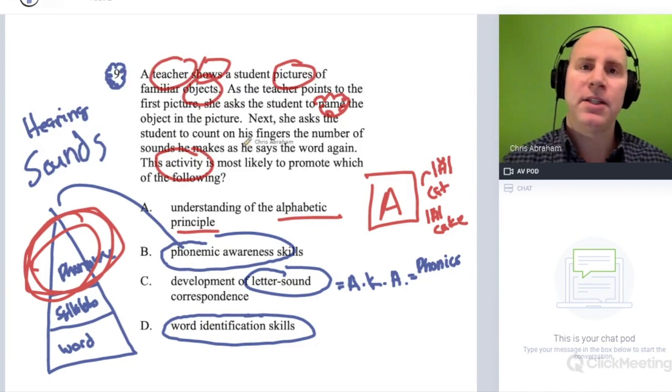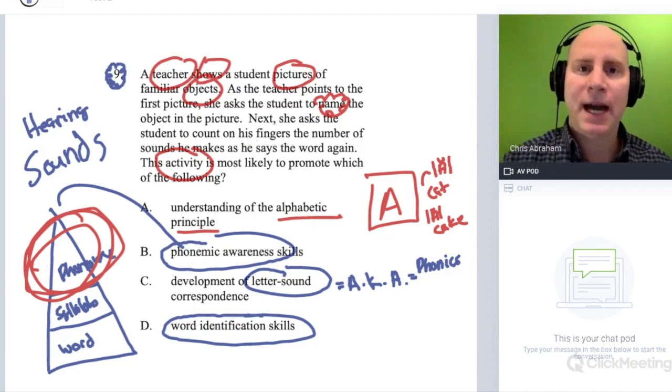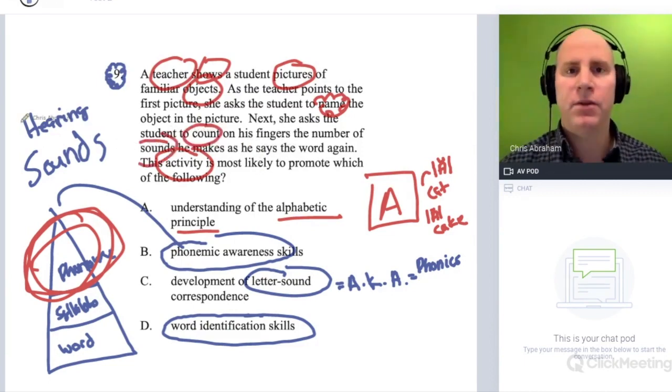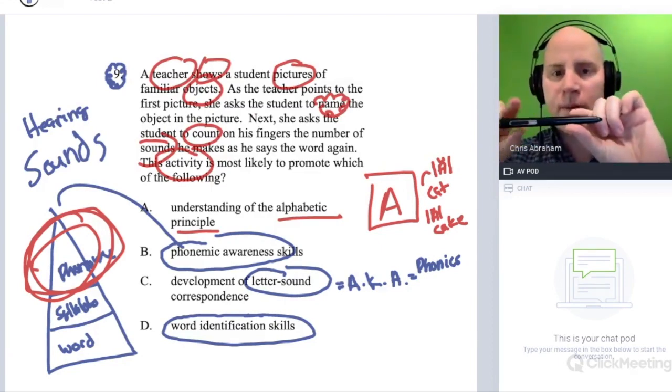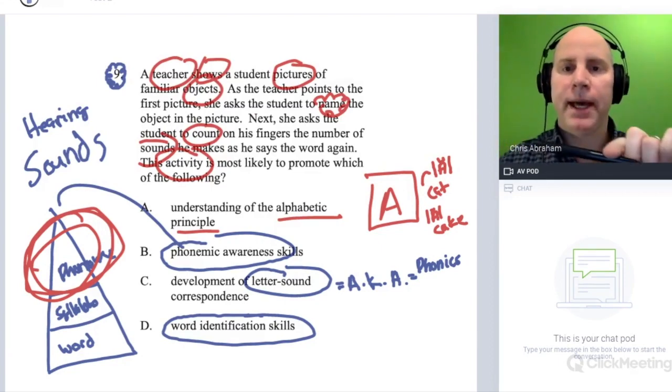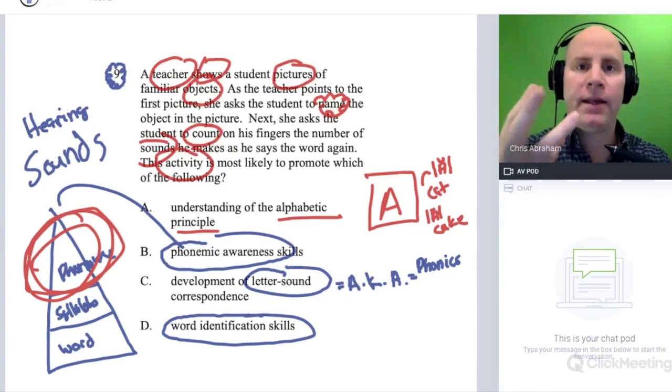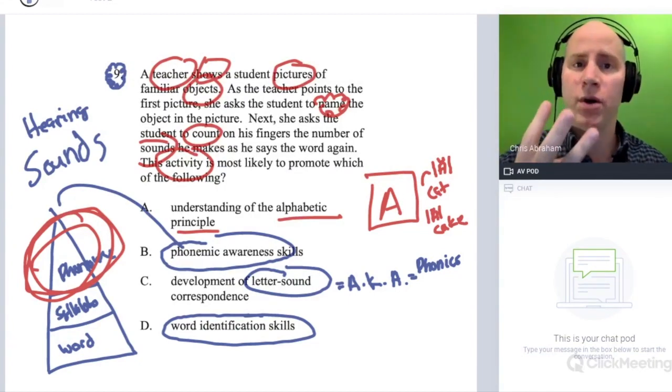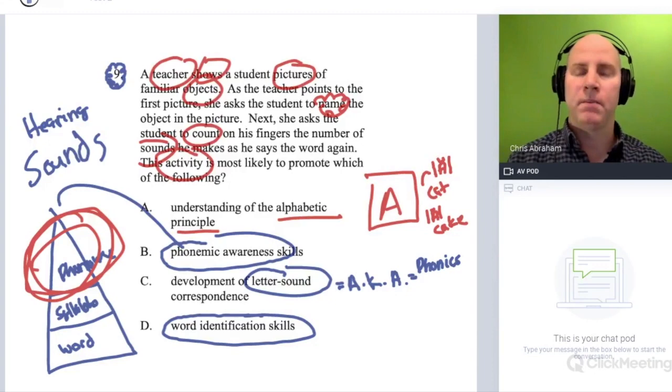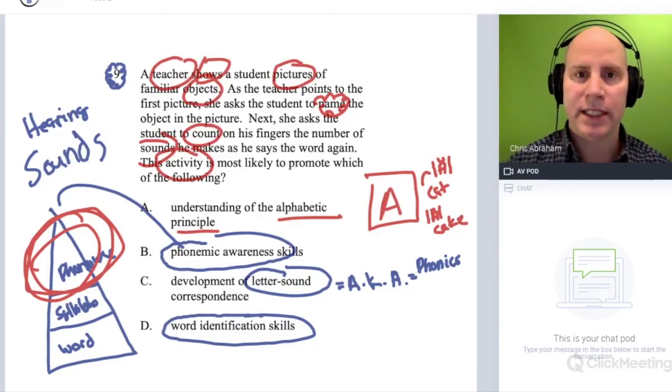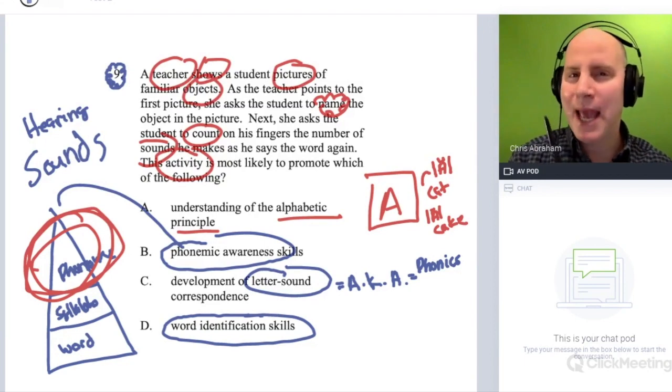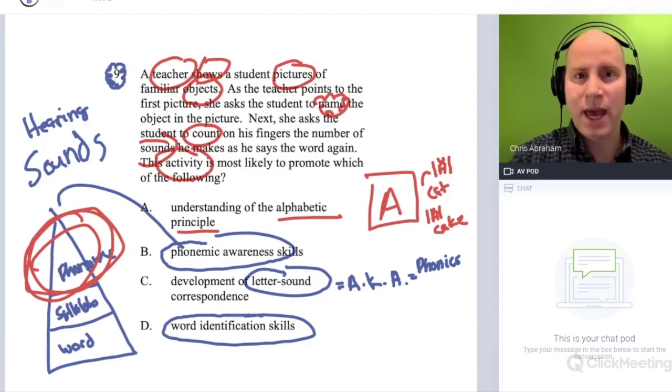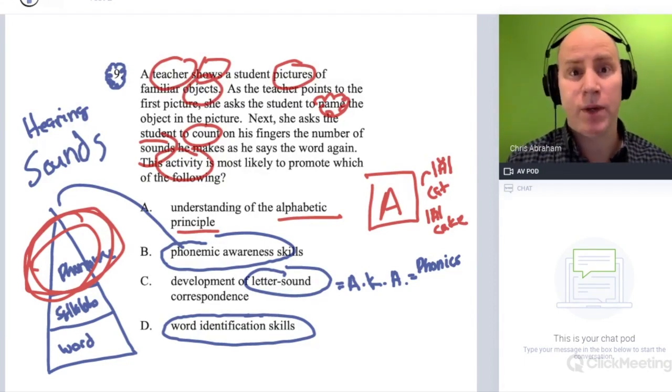So the student is orally producing the language. There's no print involved. And then the teacher wants the student to count up the sounds on their fingers. So if we were using this pen here for a moment, the student would be like, 'I hear three sounds in the word pen.' Now what is the student doing in this activity? What are they not doing? Well, they're not doing anything with print. So any of these options that have to do with print, we could cross them out.